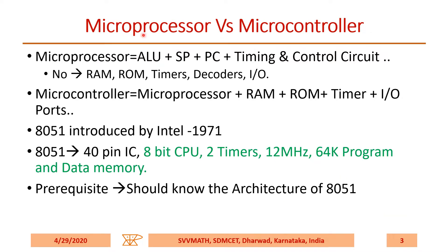Microprocessor versus microcontroller. A microprocessor has an ALU, stack pointer, program counter, and timing and control unit. It does not have any RAM, ROM, timers, or decoders, etc.